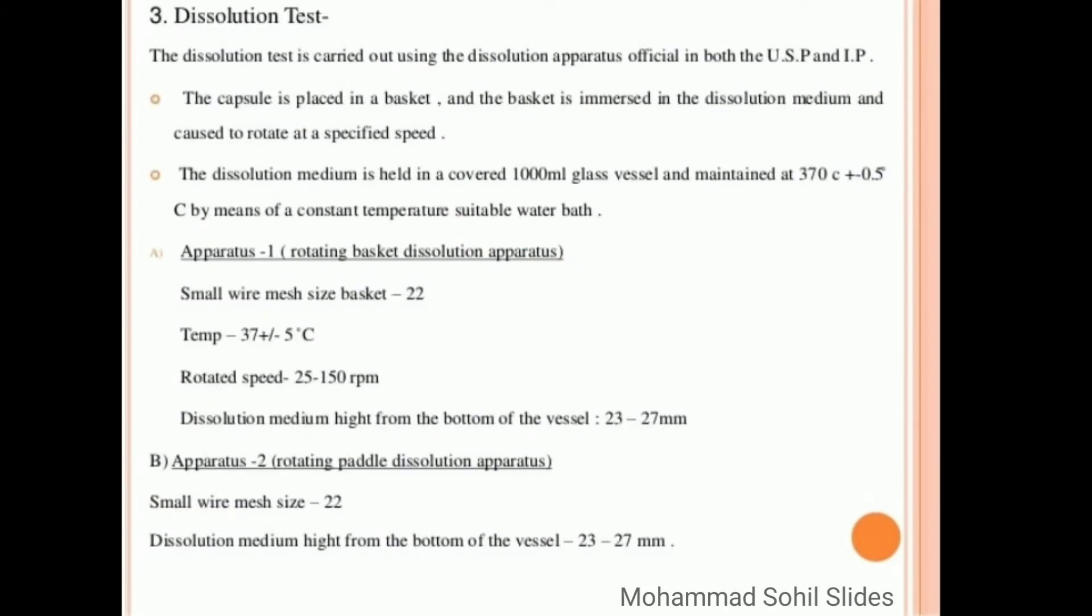Now coming to the third test, that is dissolution test. The dissolution test is carried out using the dissolution apparatus official in both the United States Pharmacopoeia and in Indian Pharmacopoeia. The capsule is placed in a basket and the basket is immersed in the dissolution medium and caused to rotate at a specific speed. The dissolution medium is held in a covered 1000 ml glass vessel and maintained at 37 degrees Celsius plus or minus 0.5 degrees Celsius by means of a constant temperature suitable water bath.